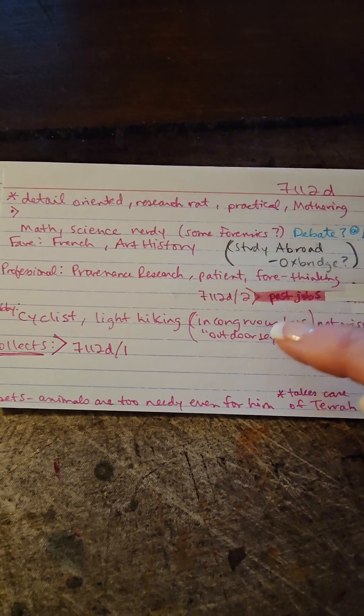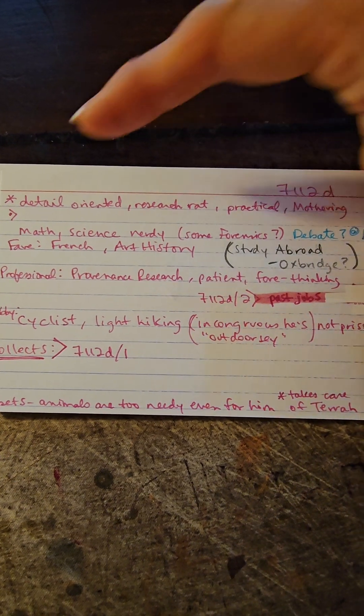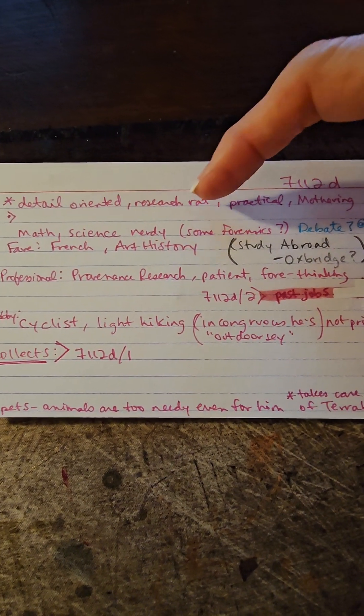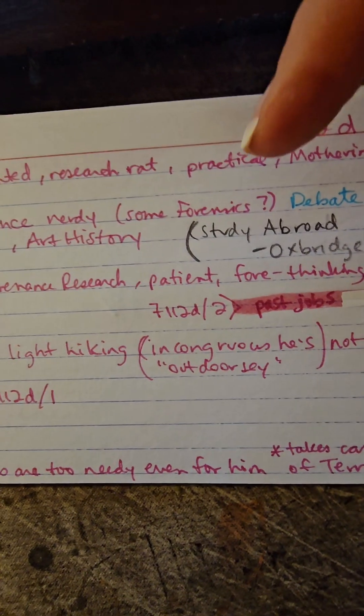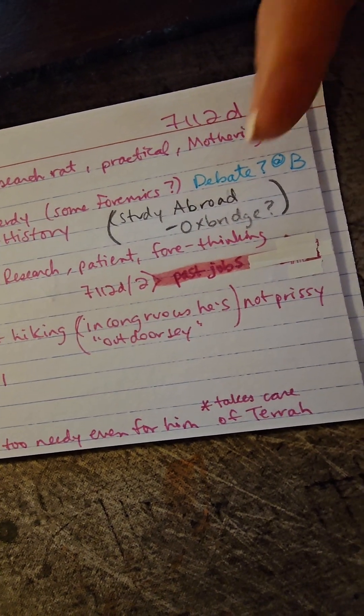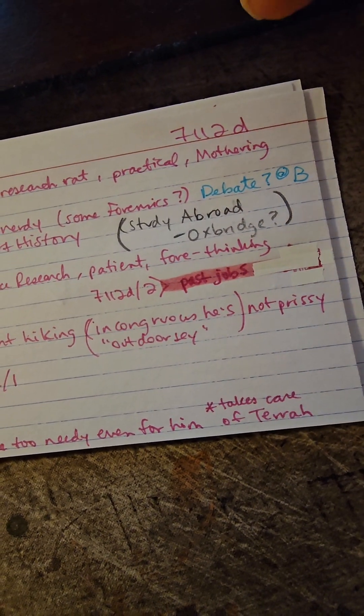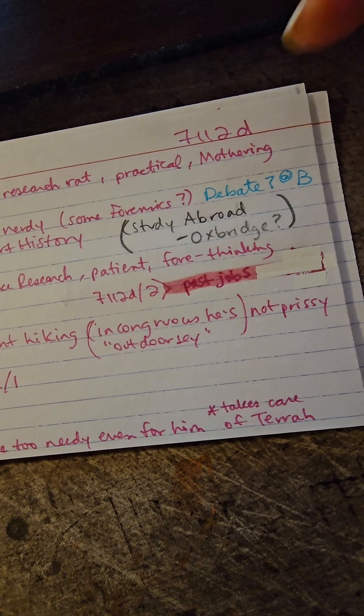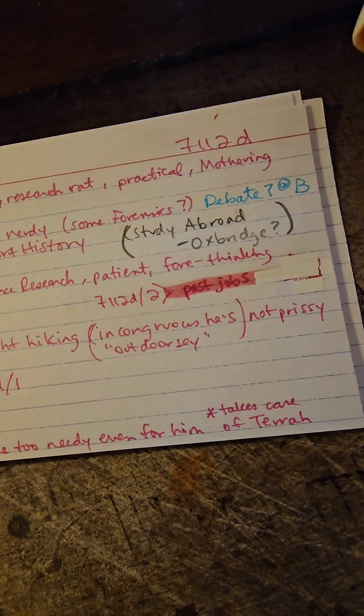Let's continue. What was he good at in school? Math, science. He was nerdy, maybe some forensics, maybe debate. That's in blue because you know that Marshall Branch is my blue character, so that relates to Branch because Branch is a former debate coach.